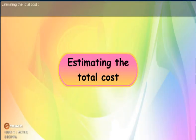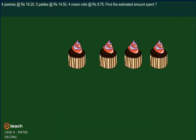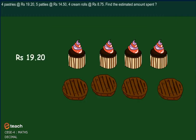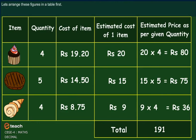Estimating Total Cost. Anjali went to a bakery and ordered some items: 4 pastries at Rs. 19.20, 5 patis at Rs. 14.50, and 4 cream rolls at Rs. 8.75. Find the estimated amount spent. Let's arrange these figures in a table first. For a quick mental estimate, round the cost to its greatest place value and then add the rounded numbers.